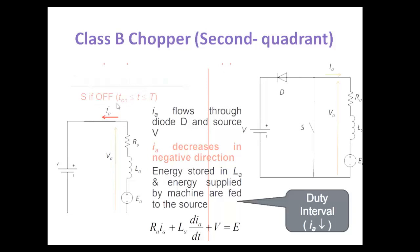In the second mode, when the switch is off (T_on to T), the inductor releases its stored energy. The current direction remains the same, the diode now conducts, and energy is transferred from load to source. I_A flows through the diode and source, decreasing as the inductor releases energy. The KVL equation becomes: R_A·I_A + L_A·(dI_A/dt) + V = E. This interval is called the duty interval.